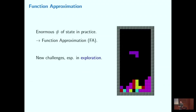We have been through two days of reinforcement learning talks. We have a lot of theoretical results in tabular reinforcement learning, which deals with problems with a small number of states and actions. But in practice we usually encounter problems with an enormous number of states, like in Atari games. So we need to introduce a new mechanism called function approximation.